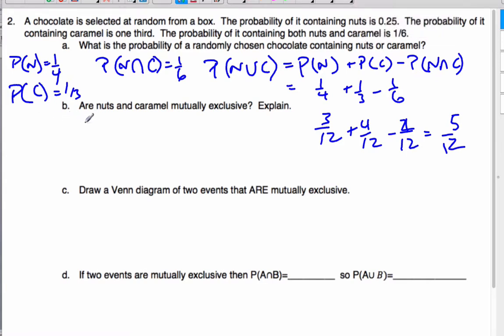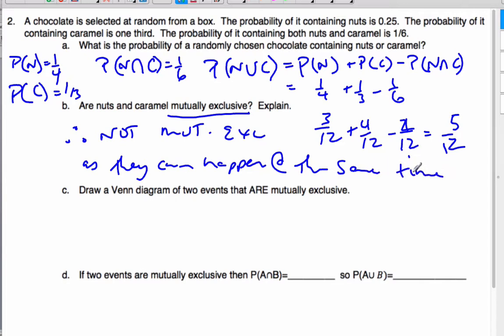Now, B part. Are the nuts and caramel mutually exclusive? Well, is there an overlap? Can my chocolate have both nuts and caramel at the same time? The answer is yes, they can. So, therefore, they are not mutually exclusive because they can happen at the same time.